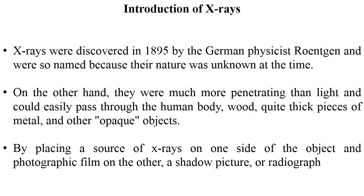X-rays were much more penetrating than light and could easily pass through the human body and quite thick pieces of metal and other opaque objects. Opaque objects are those through which ordinary light cannot pass, such as a human body or a cell phone. X-rays have more penetrating power and are highly energetic, so they can pass easily through opaque objects.